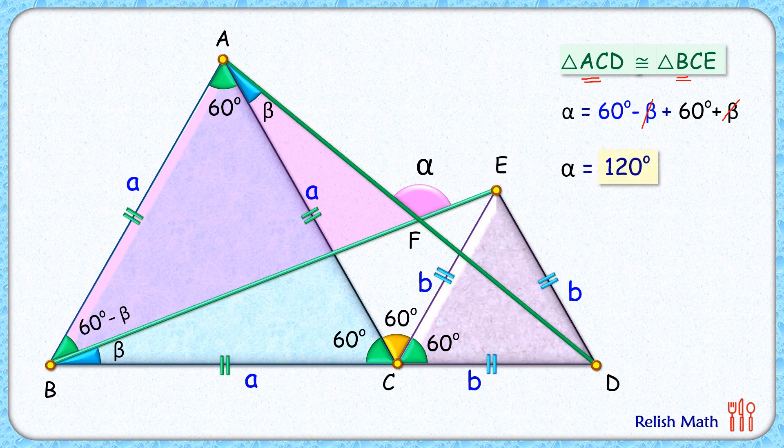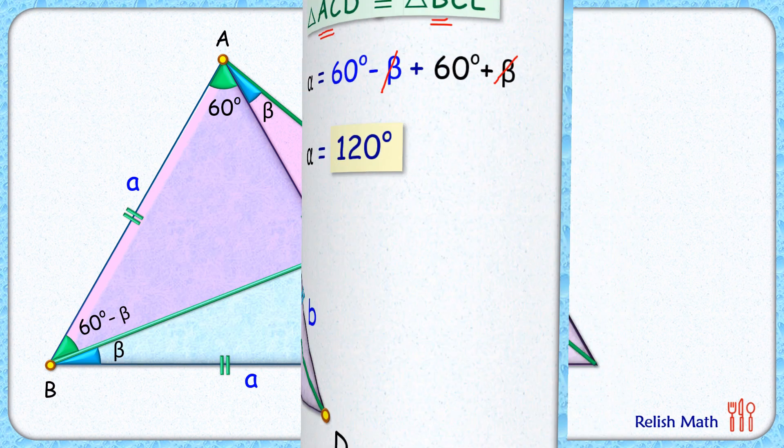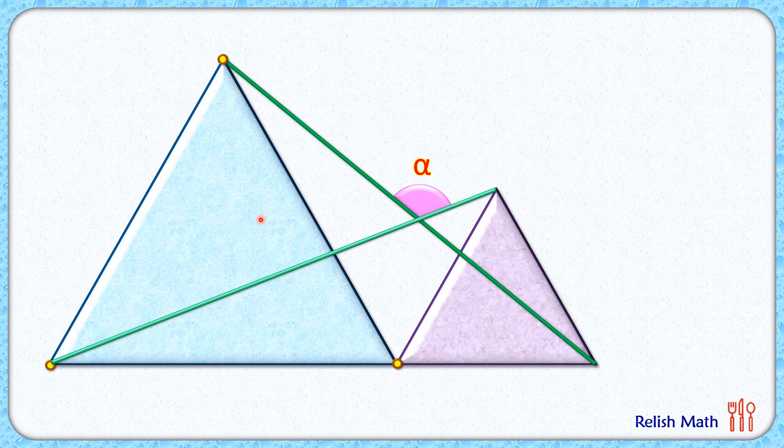Now let's check the logical approach. Here, no relative size of the equilateral triangles is given. That means for any size of equilateral triangle we take, the value of angle alpha should not change. Otherwise, the question would become invalid.